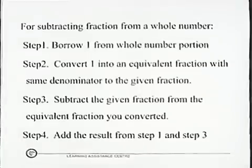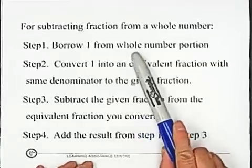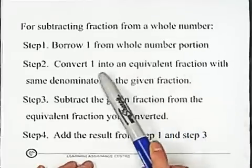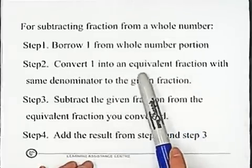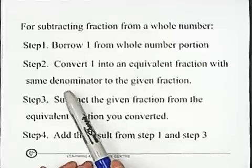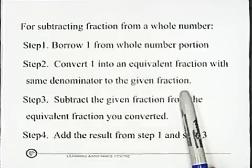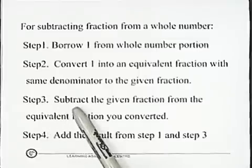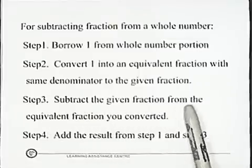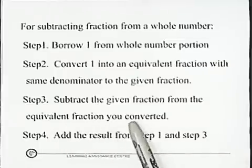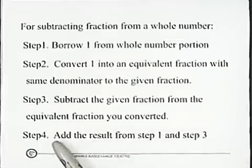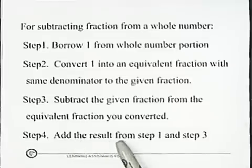Step one, borrow one from whole number portion. Step two, convert one into an equivalent fraction with same denominator to the given fraction. Step three, subtract the given fraction from the equivalent fraction you converted. Step four, add the result from step one and step three.